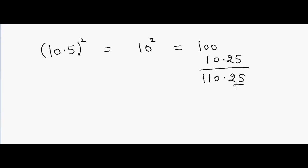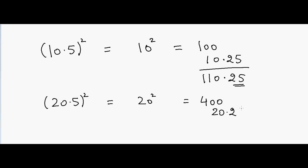Please remember that the 0.25 will remain the same for any number. So let me do another example. Suppose if I have 20.5 and I'm doing the square of this — that will be equal to 20 squared, which is 400, and then I add 20.25 in the end. So that will be 420.25. That's the answer.